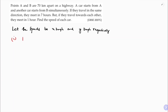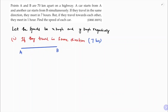Case one: if they travel in the same direction, they will meet in 7 hours. A and B are at a distance of 70 km. Speed of car A is x and car B is y. If they travel in the same direction, they will meet at point C. Definitely the speed of A will be more, because only then they can meet at C.